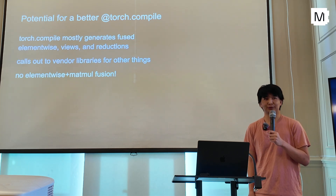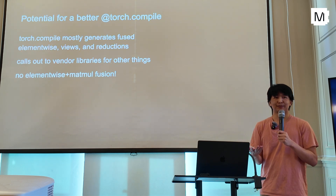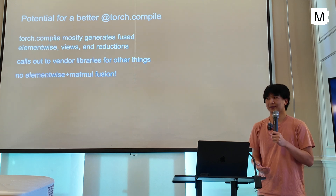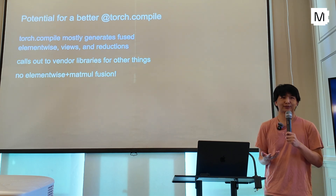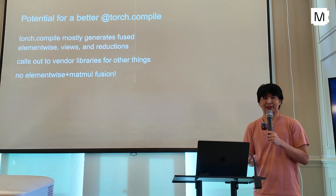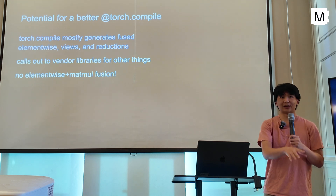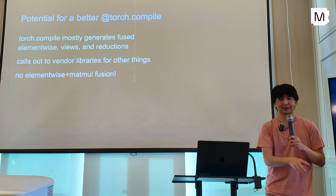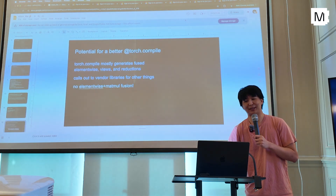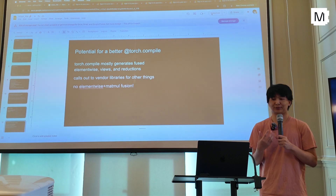Torch Compile is mostly just fused element-wise views and reductions. It won't do element-wise fusion into matmuls, attentions, or other things it calls out to cuBLAS for. But you have native implementations in Mojo of these things that take in element-wise lambdas for the inputs and outputs. So there's a pretty easy way to improve on Torch Compile here — regardless of Meta's investment in Triton performance, auto-tuning, and all that — just from a design perspective, improve on it by allowing fusion into some of the more coarse-grained, heavy-compute ops like matmuls.